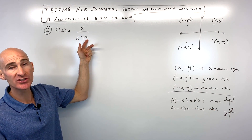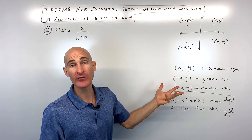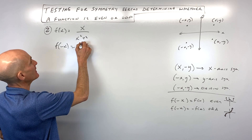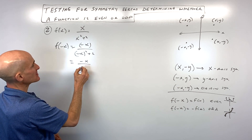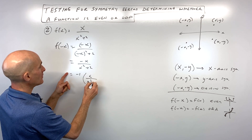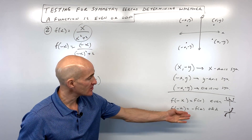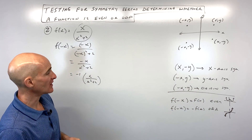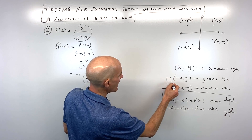Example two: f(x) = x / (x² + 2). For the even/odd test, replace x with negative x: we get negative x over (negative x)² + 2, which simplifies to negative x over x² + 2. Factoring out negative one gives negative times x/(x² + 2), which is negative one times our original function. That means it's odd — a rotation 180 degrees about the origin. Remember: odd and origin go together, even and y-axis go together.